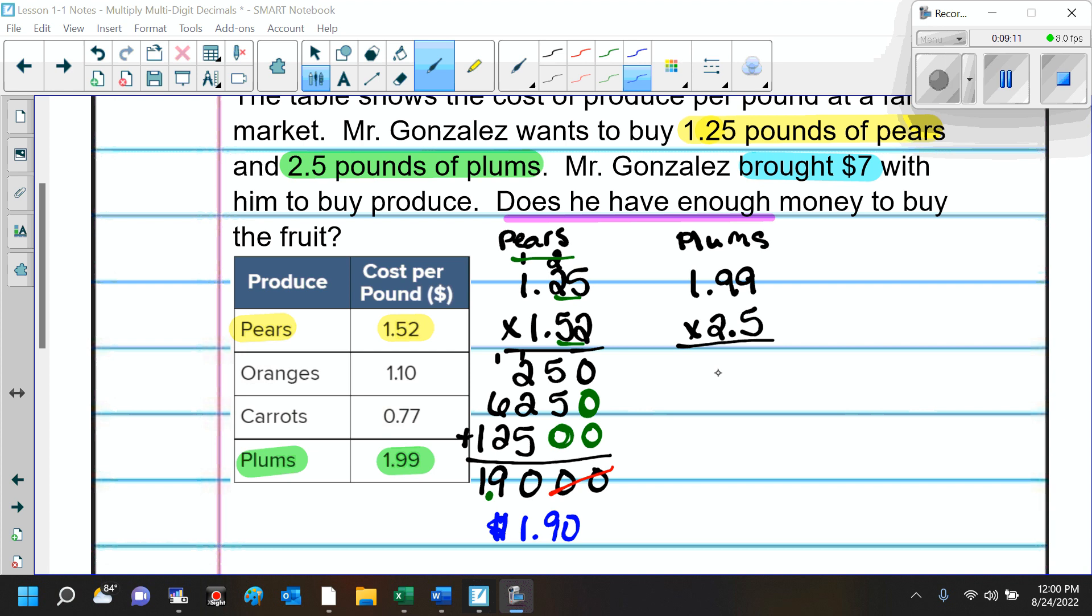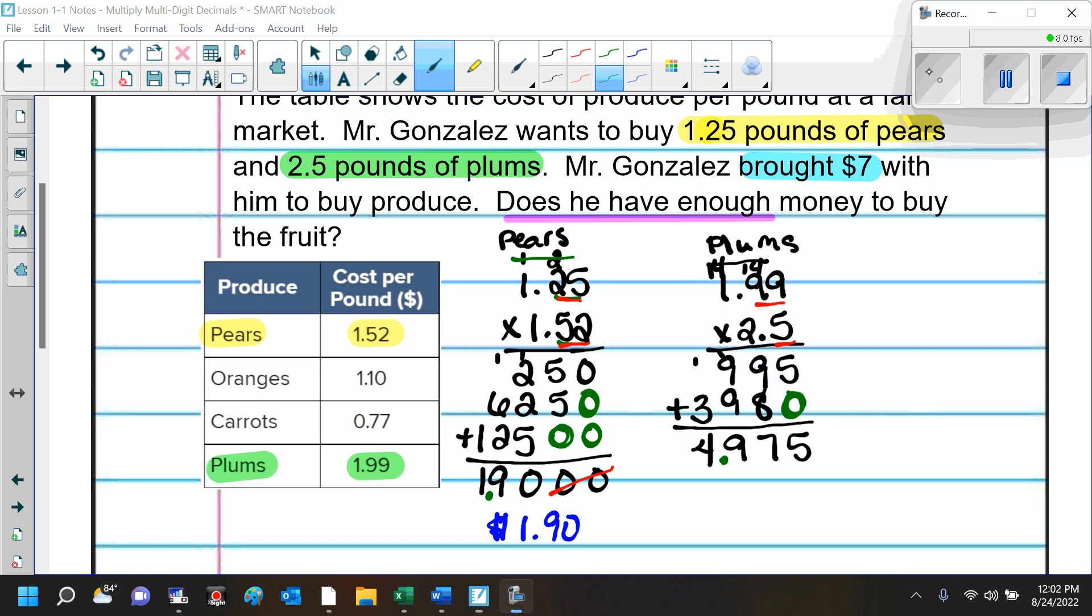Now, we want to find out how much per plums. So, we're going to multiply these two. So, here, this is our final answer for this multiplication, 4.975. Now, because we're dealing with a word problem, a real life situation, you do not want to round in the middle of the problem. You need to make sure you round at the end of the problem.